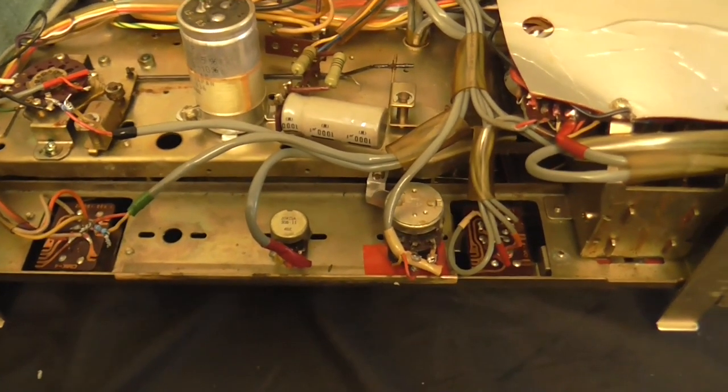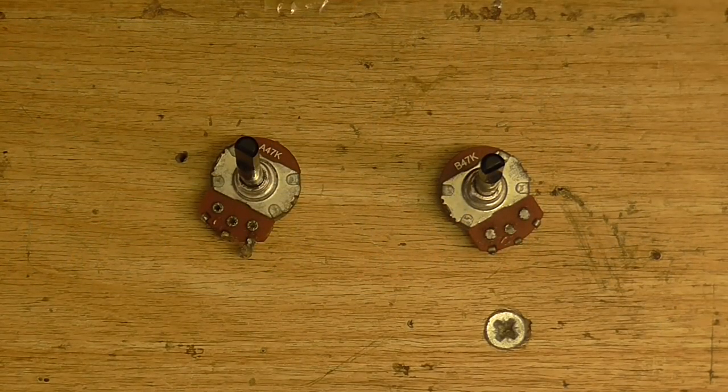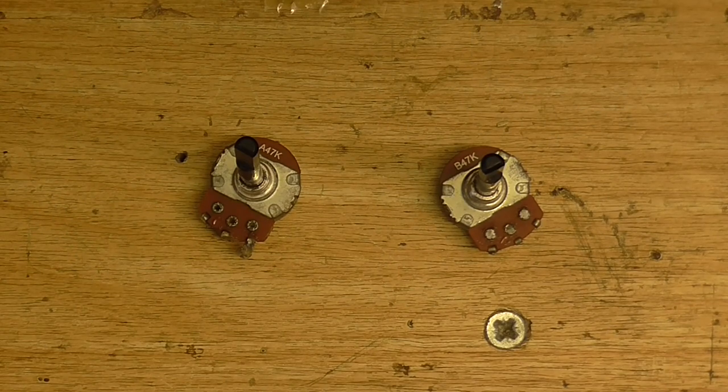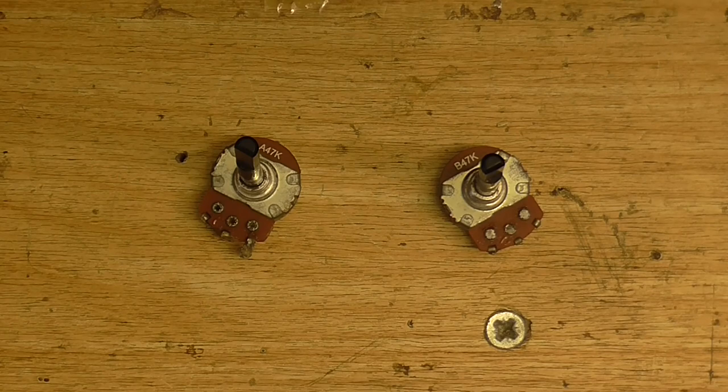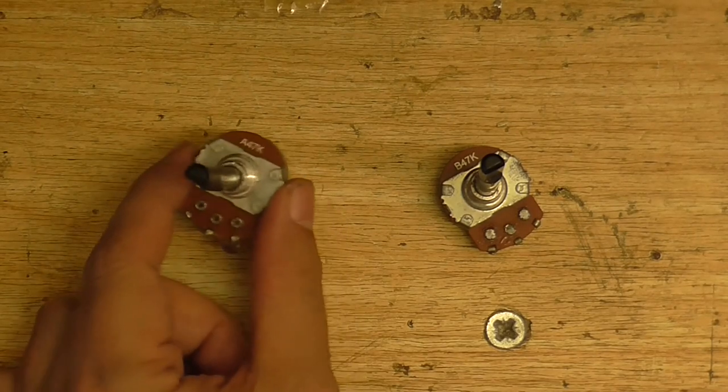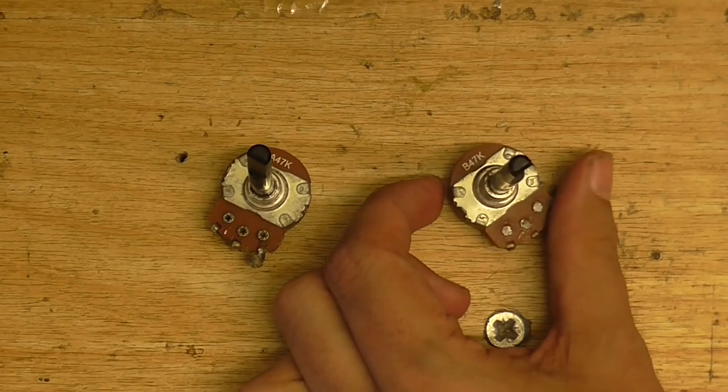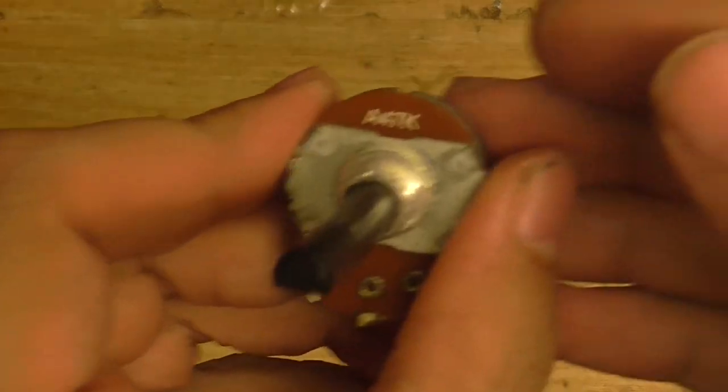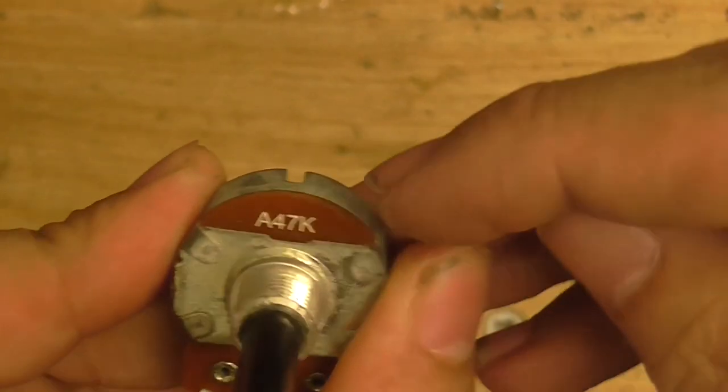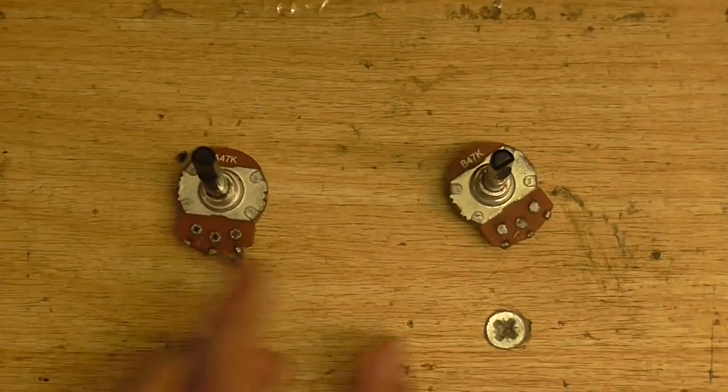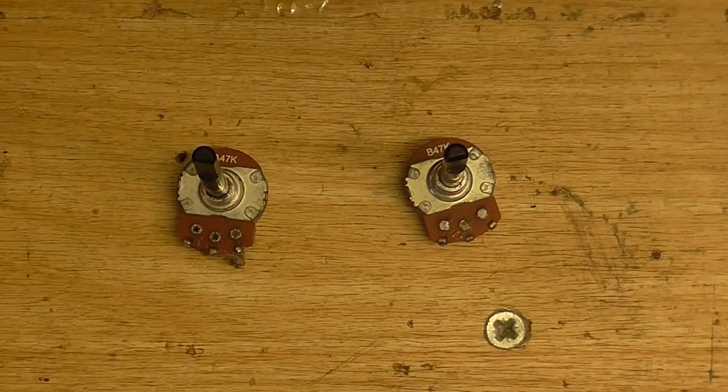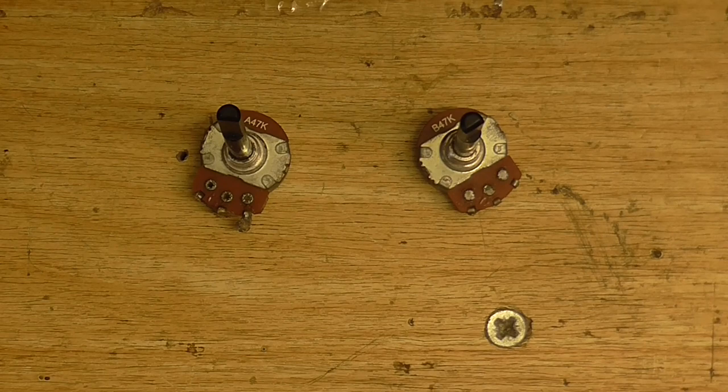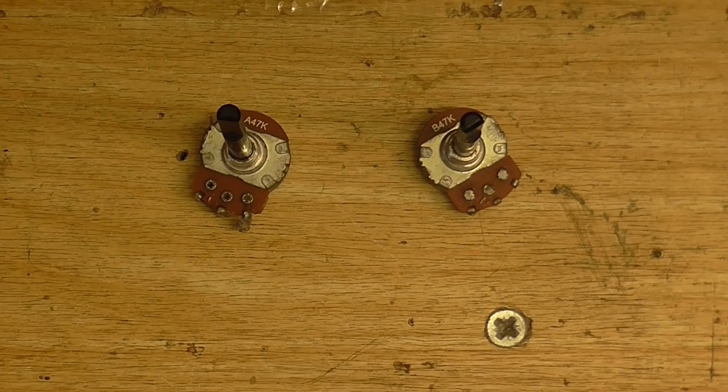But now I just want to talk about potentiometers and why you'd want to use a logarithmic potentiometer in a volume control instead of a linear one. Okay, so I have two potentiometers here. They're both 47k ohms. The only difference being one of them is a linear potentiometer and the other one is log. Can you tell which one is the log potentiometer? I'll give you a hint. It's this one. How do I know this one is logarithmic and this one is linear? Well, it's very simple. If we look at this one, you can see it says A47k. And that A means that it is log. Whereas this one says B47k, which tells me it's linear.